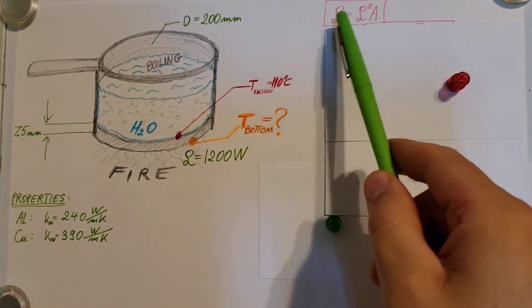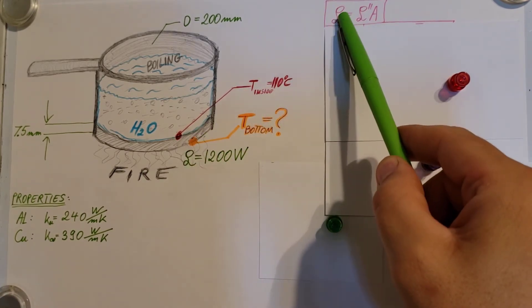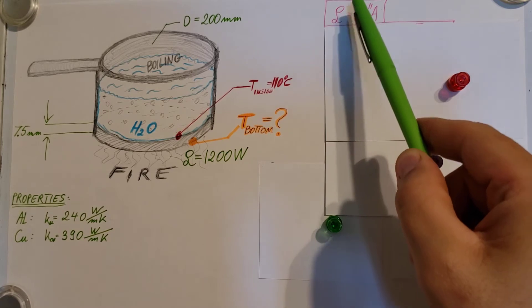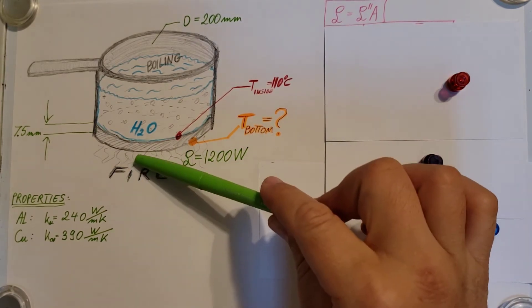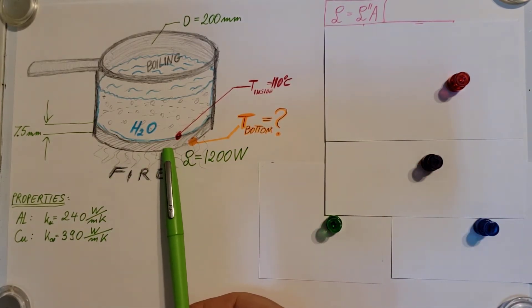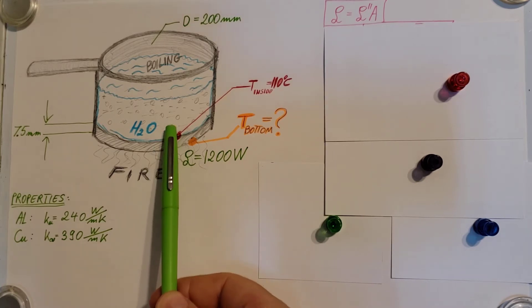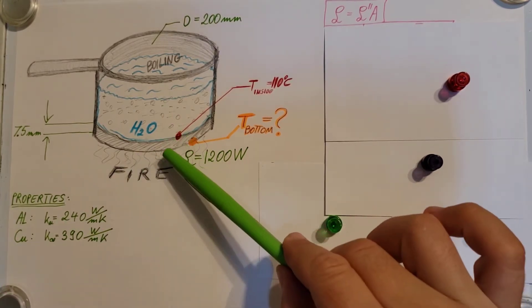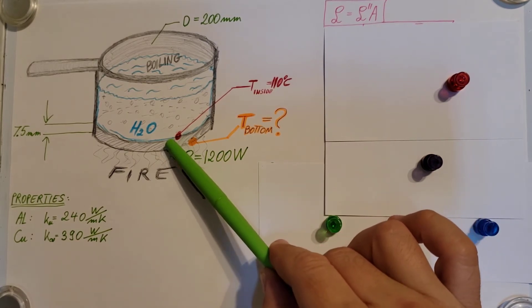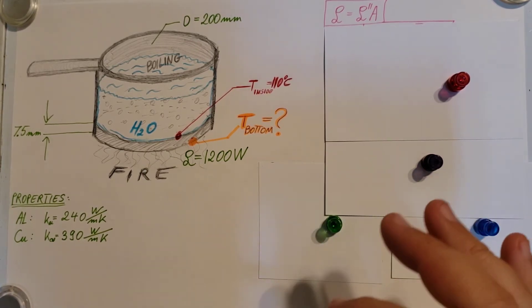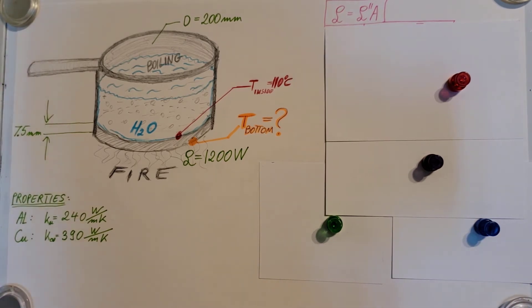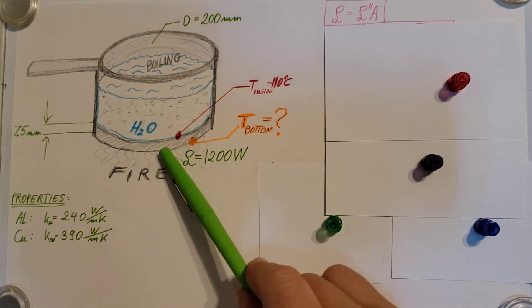From here, we know the area and we know Q, so the only thing we don't know is flux. What kind of flux are we dealing with here? We're going to have this heat coming from the stove, arriving at this surface of the pot or the pan, going through it all the way till it gets to the other side, and then it heats the water. We're going to be going through this solid material, so we're going to be dealing with conduction. We're going to ignore any kind of radiation or convection in this problem.